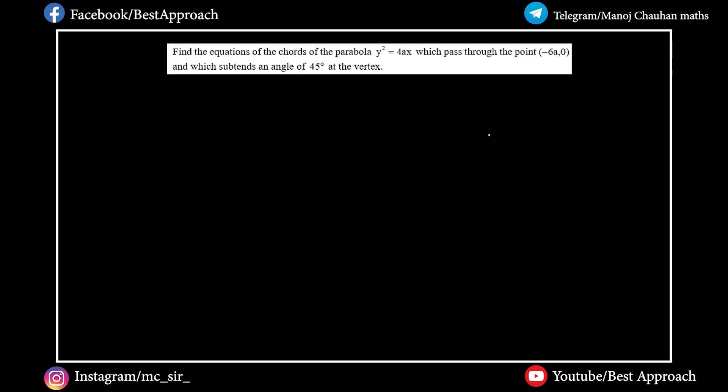Hello students, welcome to Best Approach. Today we are going to solve a parabola question. First, let's read the question. Find the equation of the chords of the parabola y²=4ax which passes through a point and which subtends an angle of 45 degrees at the vertex.